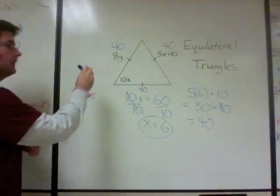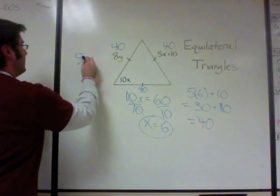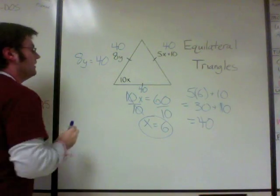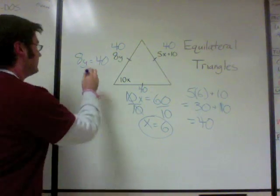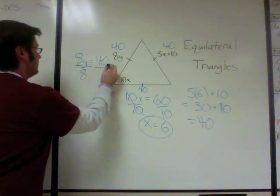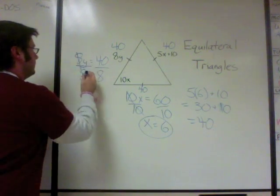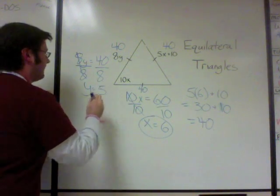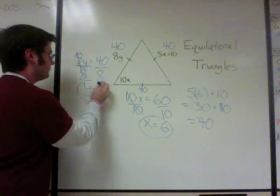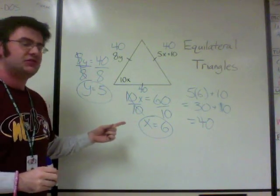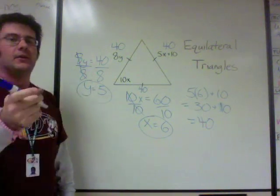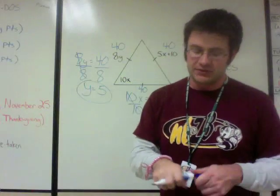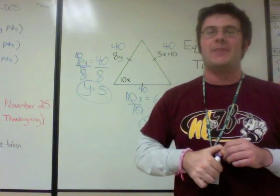So 8y equals 40. We just have to divide both sides by 8. So there you go: x equals 6, y equals 5. There's a quick example problem using equilateral triangles, and that's all the time we have for the math office today.